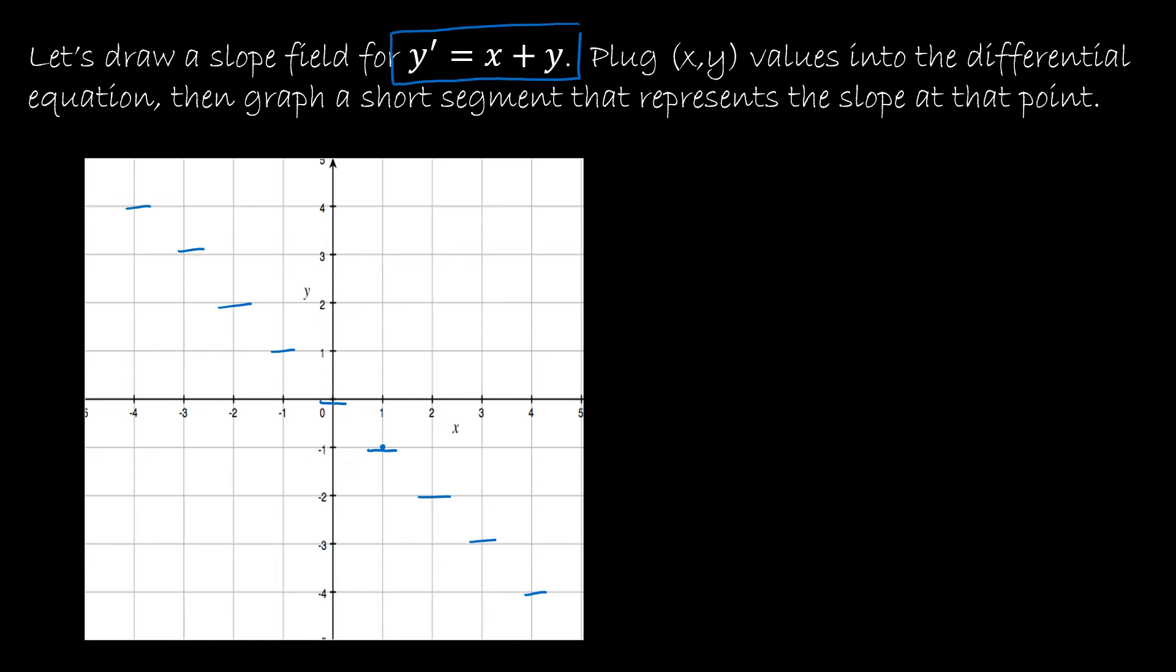I could do the same for the point (1, 0). So 1 plus 0 is 1, and a slope of 1 is a segment that has a 45-degree angle. We can see that quite often, if you were to create a slope field, you would have a pattern just as we're seeing here.